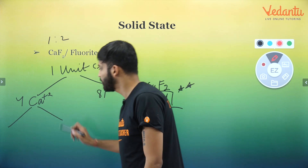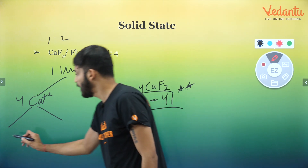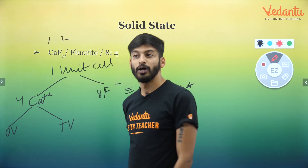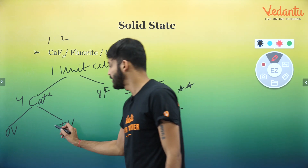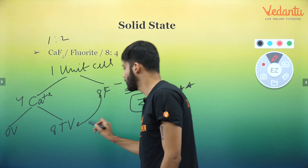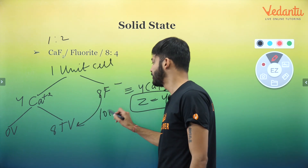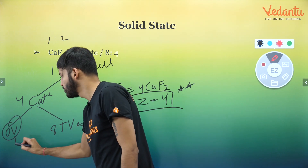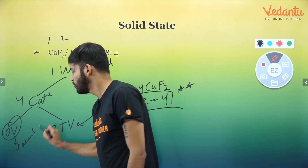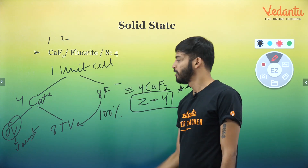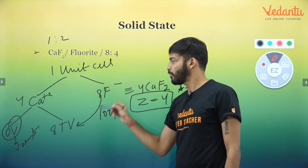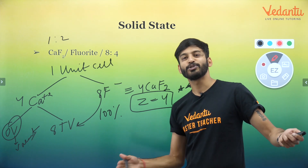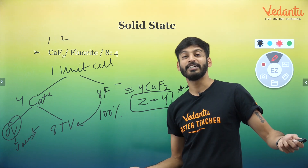This gives us both octahedral and tetrahedral voids. The tetrahedral voids — there are 8 of them, and they are completely filled, 100%. The octahedral void is vacant — it's empty. The whole tetrahedral void will be filled by F⁻.